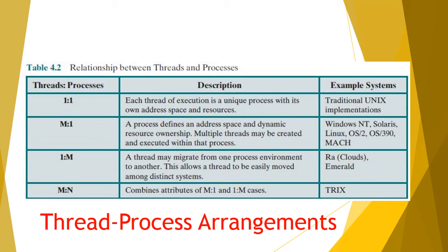Threads and processes can have four kinds of relationships. The single-threaded approach is the one-to-one relationship: each process contains a single flow of execution — UNIX is an example. The multi-threaded approach is the many-to-one relationship: each process contains multiple threads — examples include Windows, Solaris, Linux, OS/2, OS/390, and Mac.